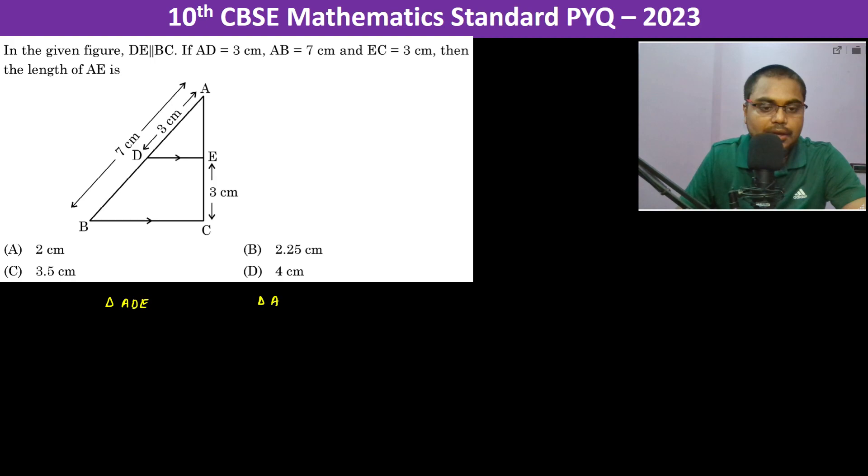We can clearly say that angle A is equal to angle A, which is the common angle between them. Angle D is equal to angle B, and angle E is equal to angle C, which are corresponding angles.